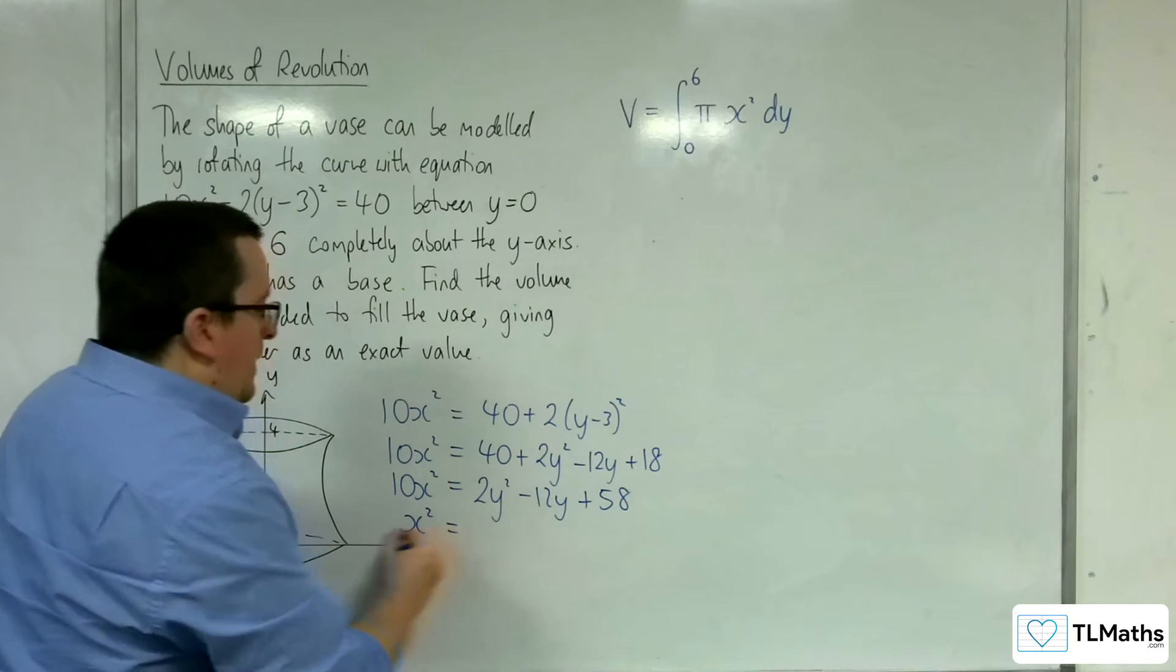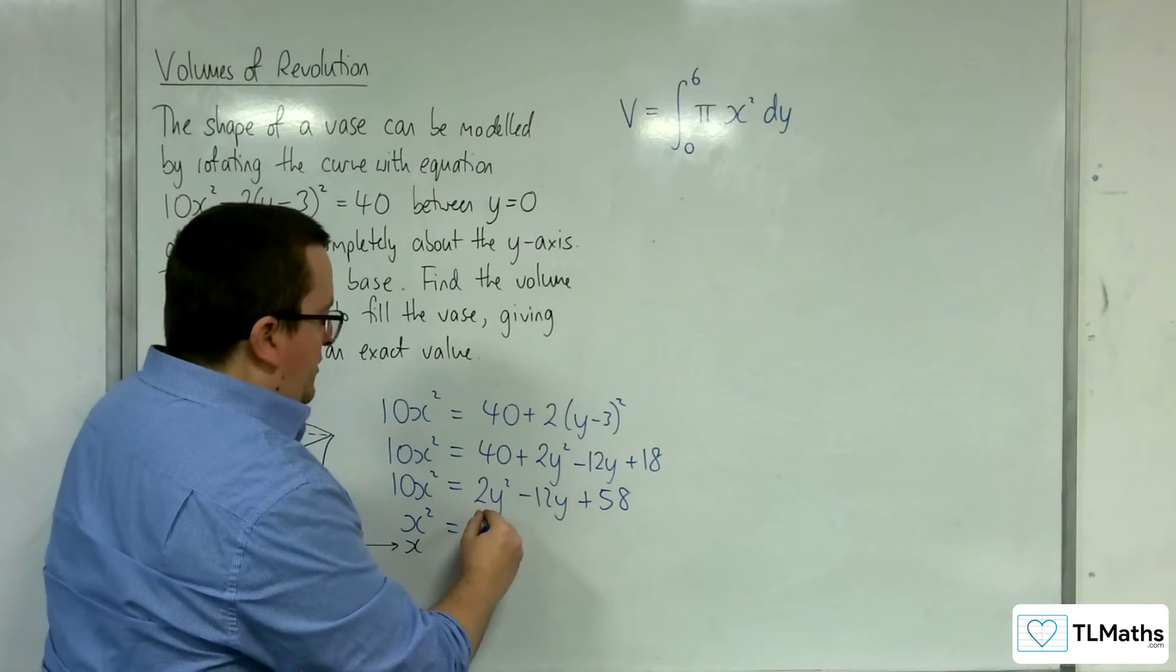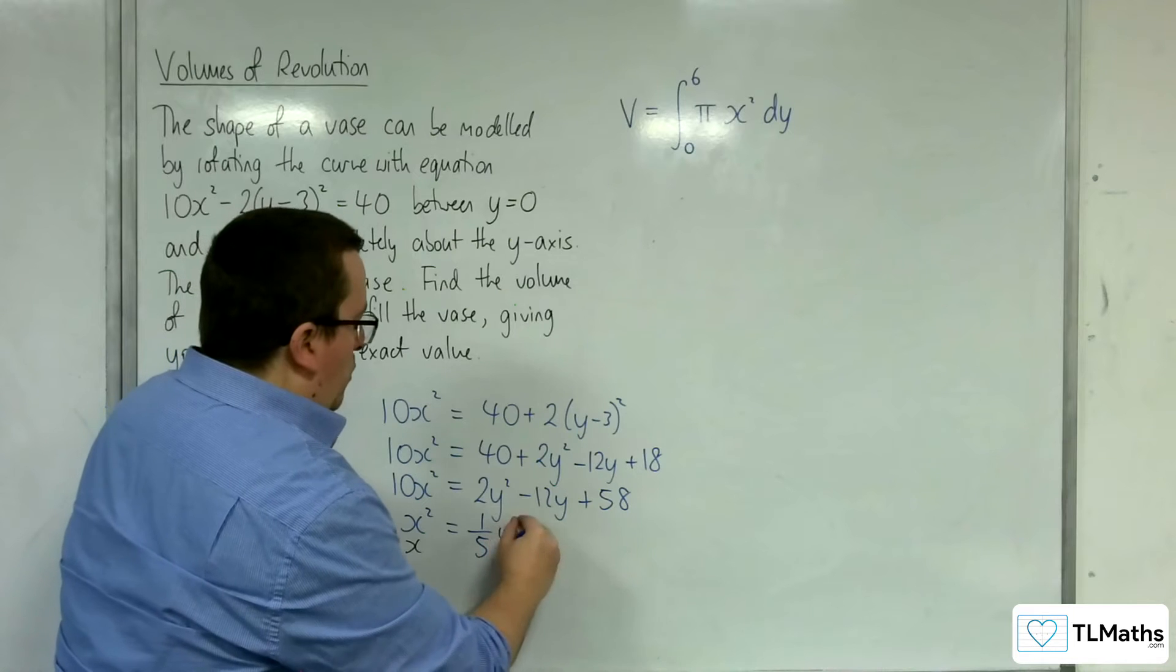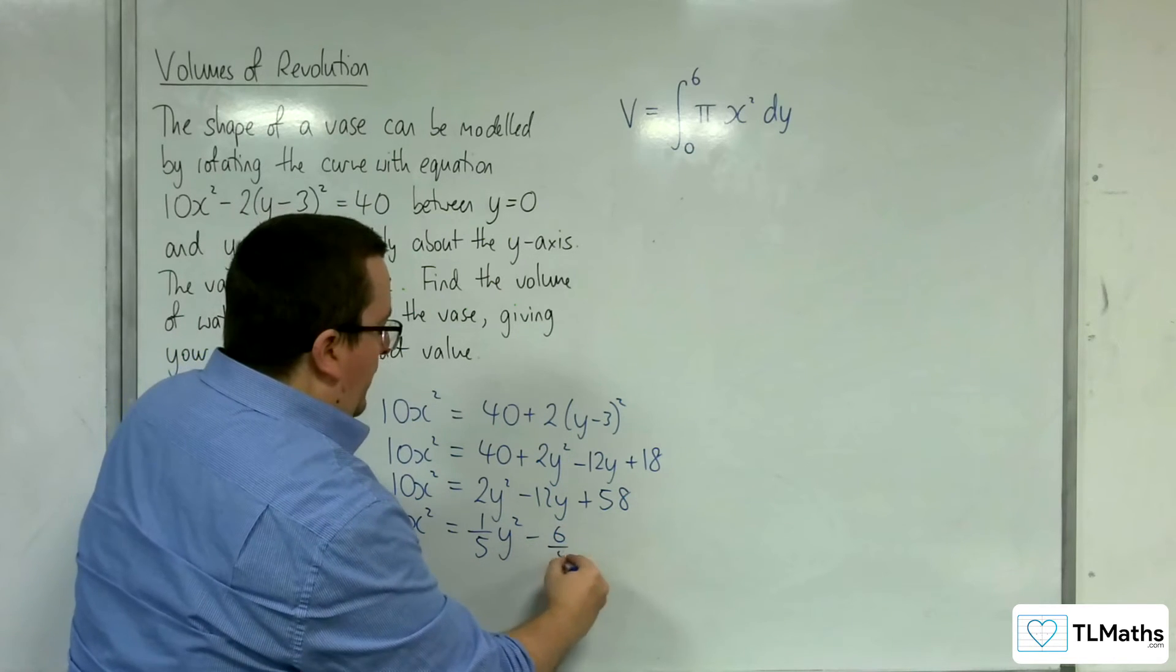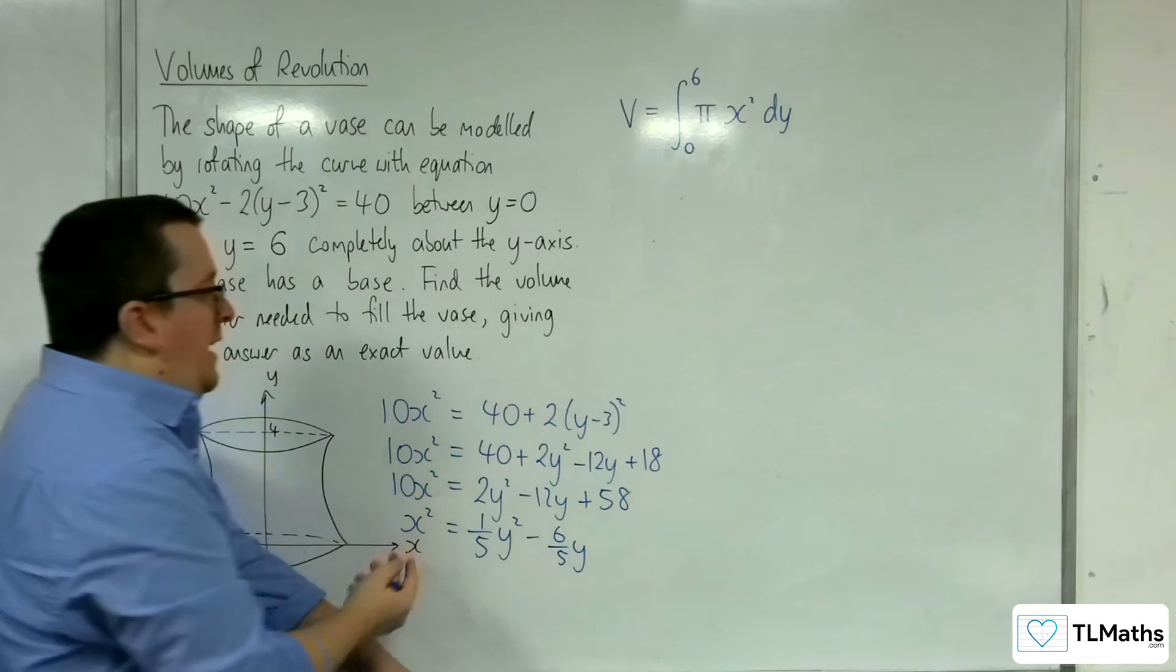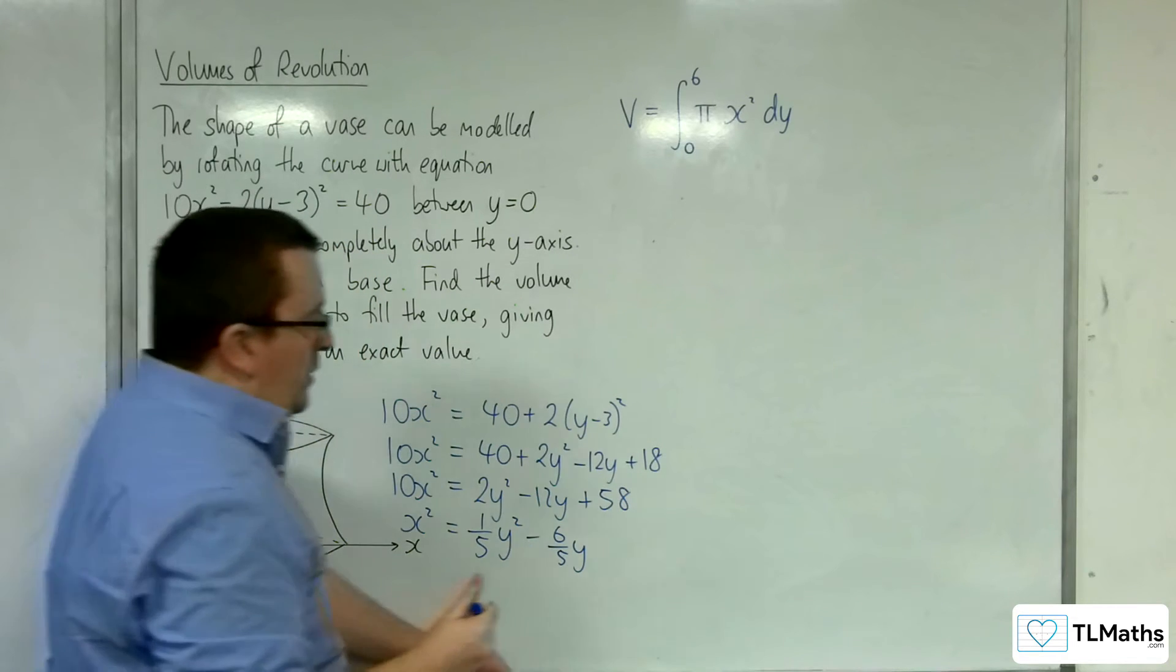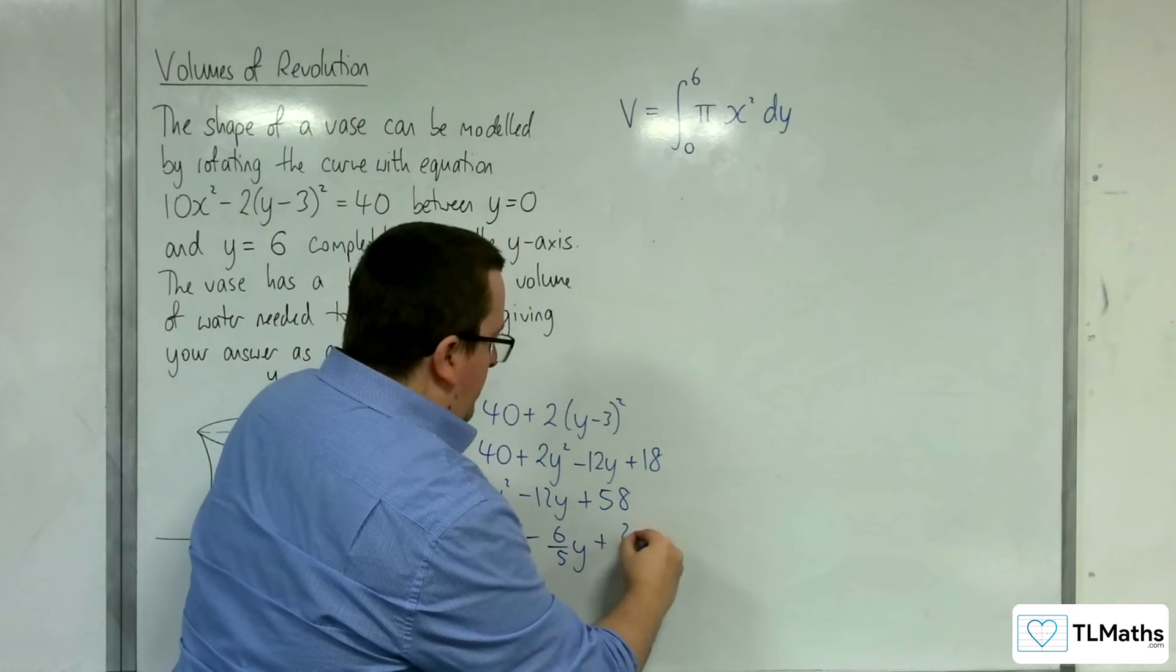So we get x² is equal to 2 over 10, so 1/5 y², take away 12 over 10, so 6/5 y plus 58 over 10, which is going to be 29/5.